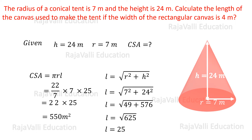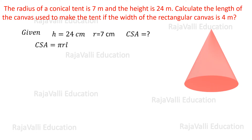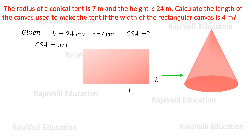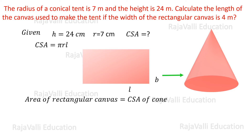Substituting the values, we will get 550 meter square as the CSA of the cone. As already mentioned, the rectangular canvas is changed into a conical tent, so CSA of the cone is equal to the area of the rectangular canvas. The area of the rectangular canvas equals length (L) into width (b). The CSA of the cone is 550 meters square.